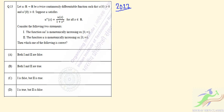Let u, which belongs to the real space, be a twice continuously differentiable function such that u(0) is greater than 0 and the first derivative u'(0) is also greater than 0. Suppose u satisfies the differential equation where the double derivative u''(x) equals u(x) divided by (1 + x²). We have to check whether two given statements are correct or false.